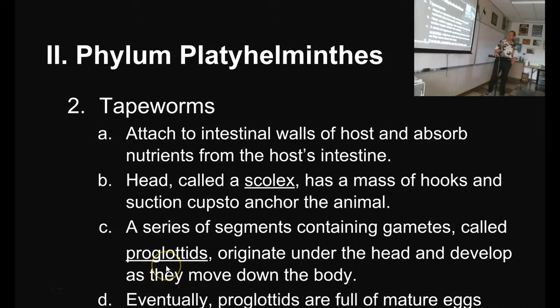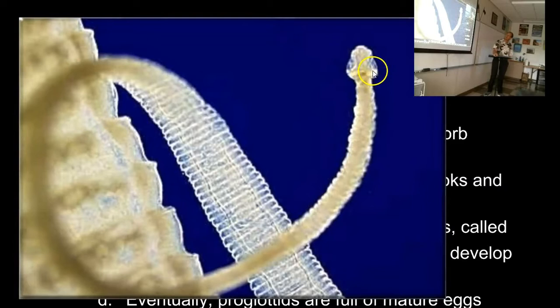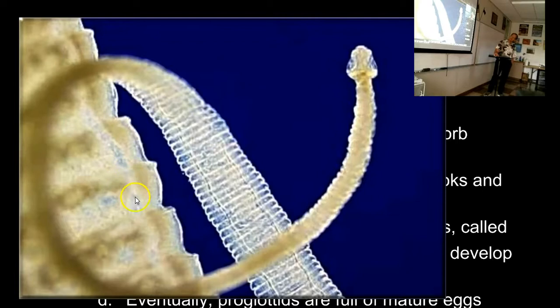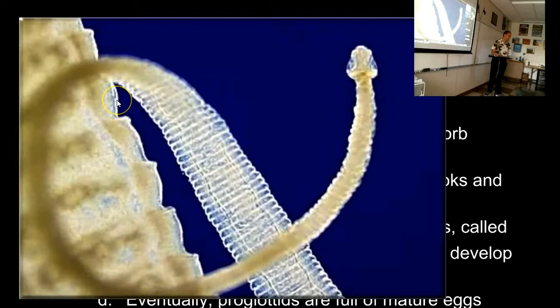These proglottids are purely reproductive structures that swell up and get full of eggs and break off the end of the worm. This is what they look like — this is the head, the scolex. Everything that the tapeworm is of itself is the head. All the rest of the worm: every segment starts small near the front, then in the mid part they start to flatten out, swell, and get bigger. Near the end of the worm they're huge. All they're doing is making eggs and swelling with full mature eggs. The whole body of the worm is reproductive structure.